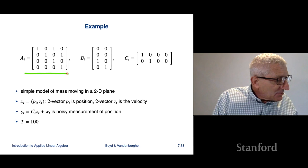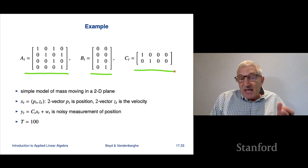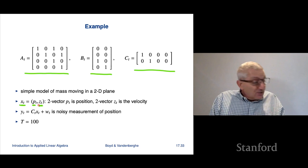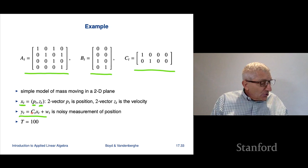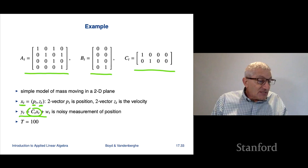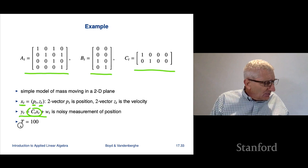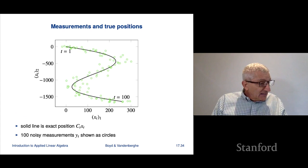All right. So we're gonna look at an example. And it's got that's the dynamics matrix A, they're constant, that's B, that's C. And this is essentially a very simple model of a mass moving in a two-dimensional plane, where xt is its position and its velocity, each of which is a two-vector, so it's a four-vector. And then what we're gonna get is we're gonna get the true position, that's ct, xt plus wt. And that's gonna be a noisy measurement of position. And we have 100, we'll do a horizon of 100 timesteps.